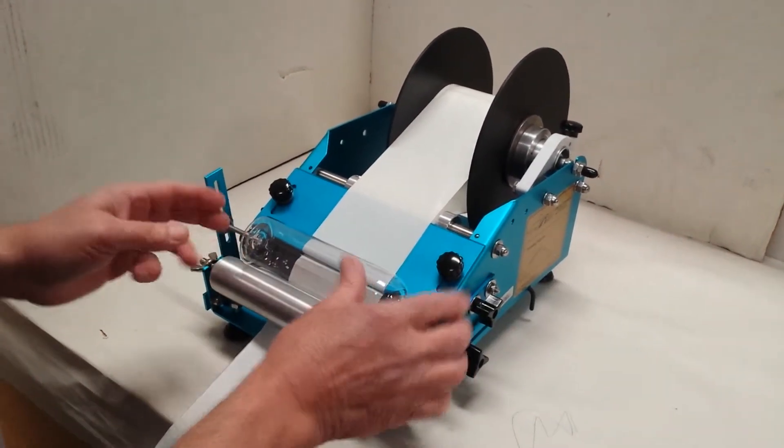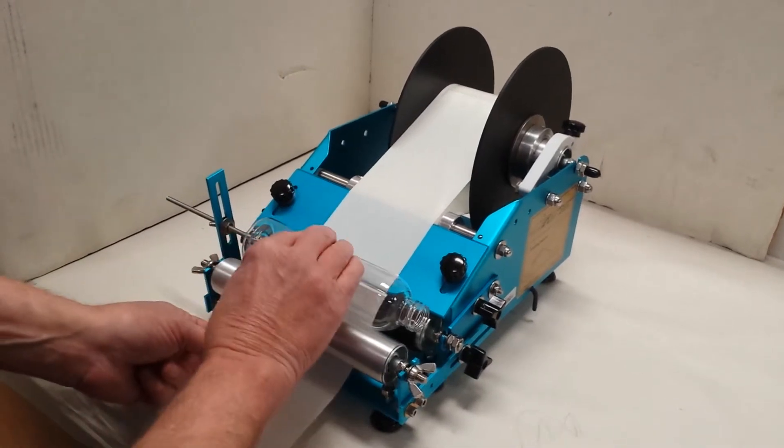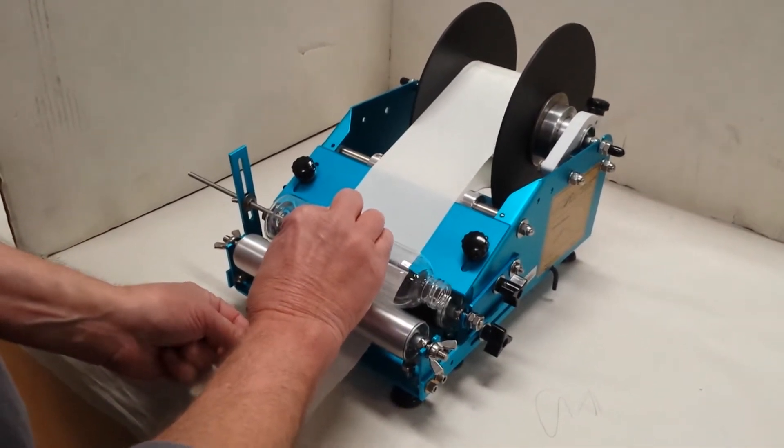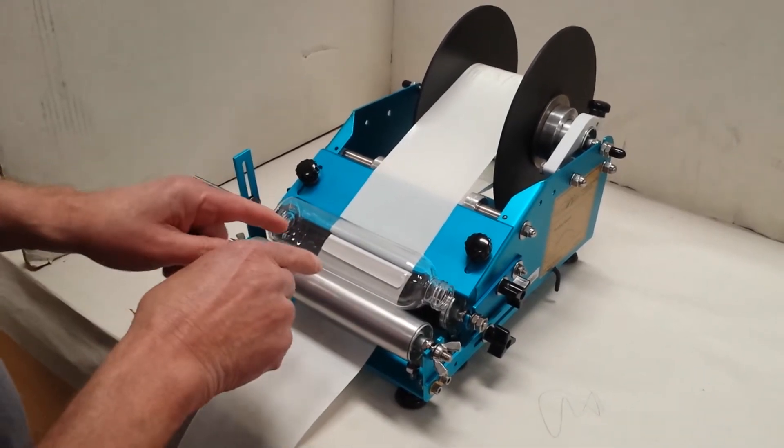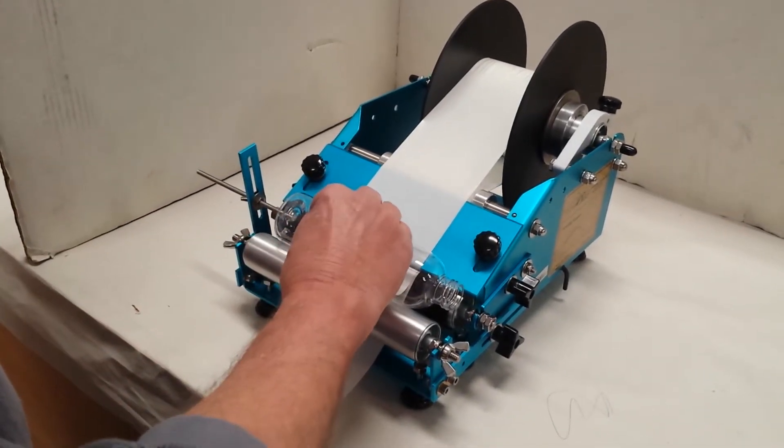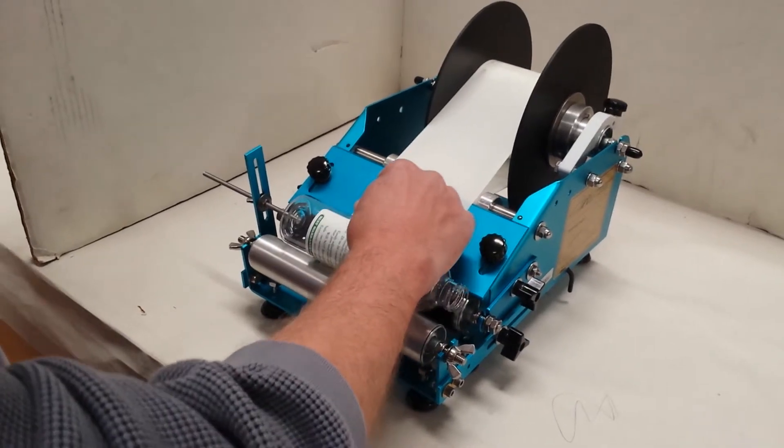You put the container in with no label showing. Put your right hand on top of the container. With your left hand you give a little pull. That engages the label to the container and then you simply roll the container and the label is applied.